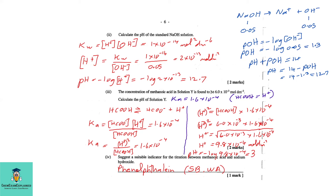Part b3: The concentration of methanoic acid in solution Y is found to be 6.0 × 10⁻³ mol/dm³. Calculate the pH of solution Y. From the previous part we know Ka = 1.6 × 10⁻⁴ and the concentration of methanoic acid is 6.0 × 10⁻³ mol/dm³.